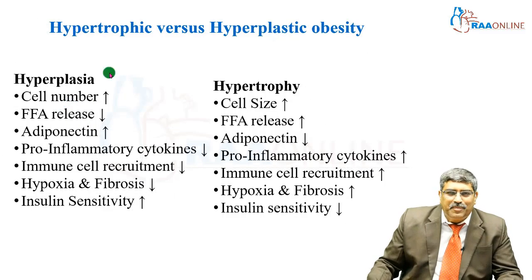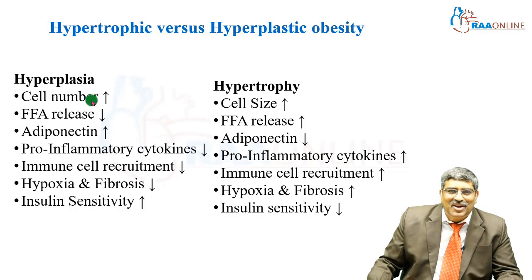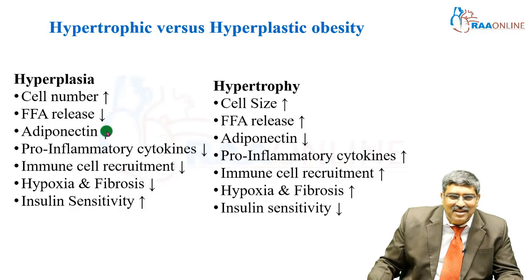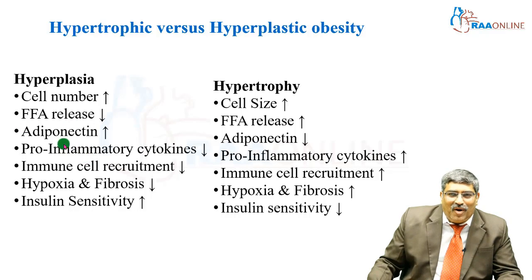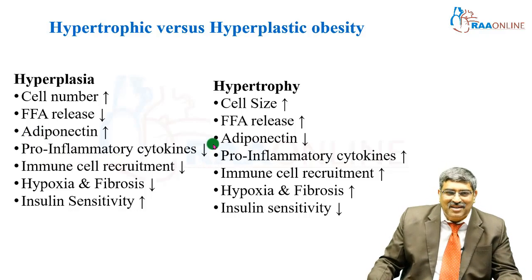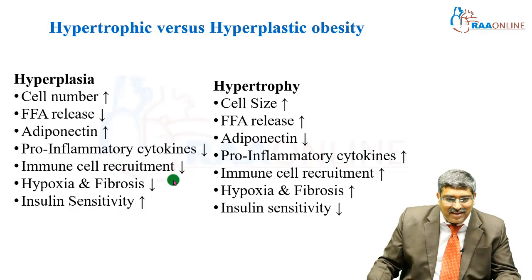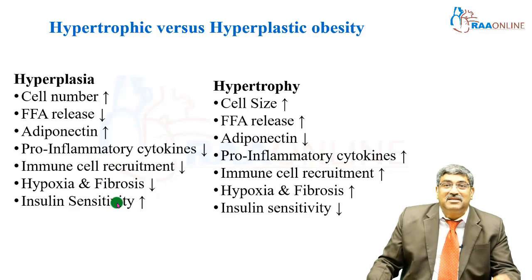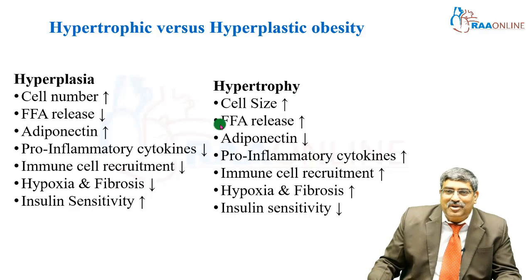In hyperplasia, the number of fat cells is increased, free fatty acid release is decreased, adiponectin is increased, and most importantly, pro-inflammatory cytokines are decreased. Therefore, immune cell requirement is decreased, and there is decreased hypoxia and fibrosis, and insulin sensitivity is maintained.